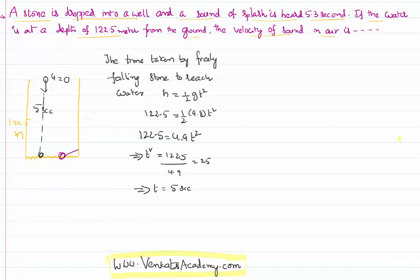Now it has reached the bottom and a sound is generated here. This sound will go back because there is an observer who has dropped that stone. The stone has to fall down and sound has to go back. So for the sound, I can write again S = ut + ½at². Sound has to cover back the same distance 122.5 meters. u is nothing but the velocity of the sound.